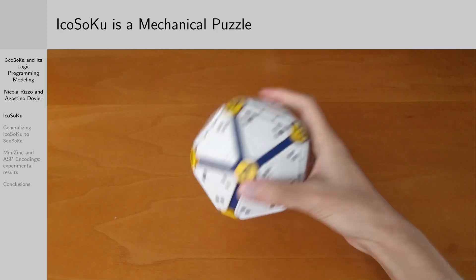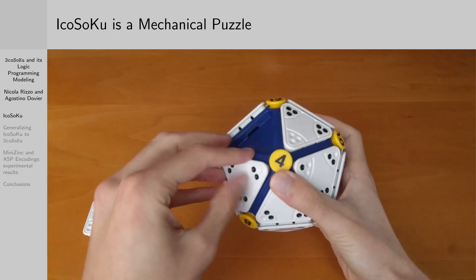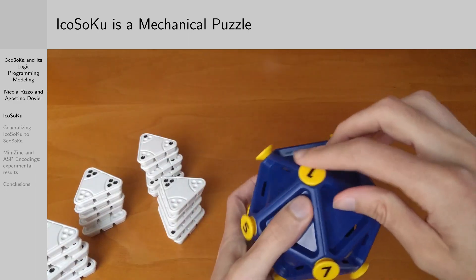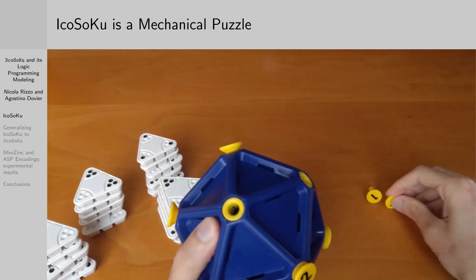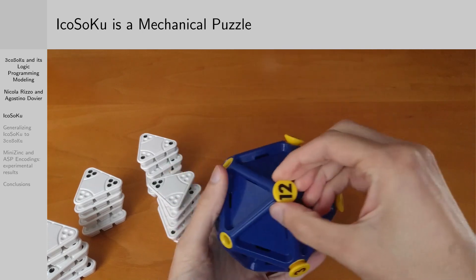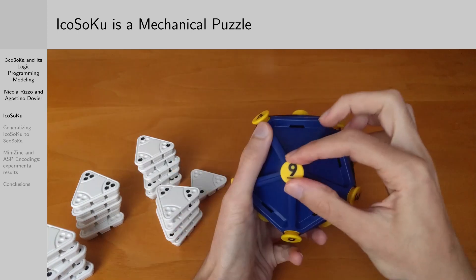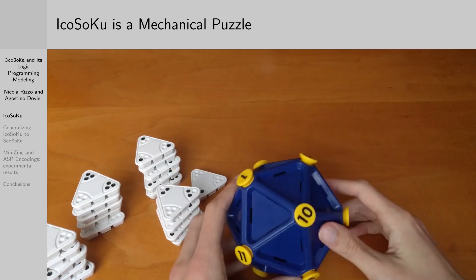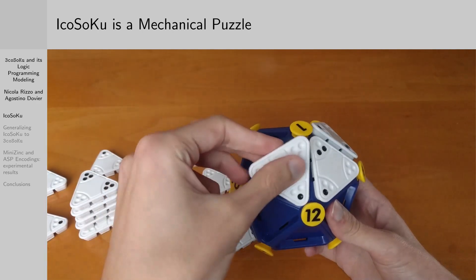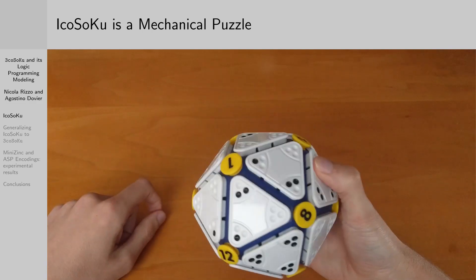So let's talk about the game. Icosoku is a mechanical puzzle created in 2009 by Andrea Mainini. It's made of a blue plastic icosahedron, 12 yellow pegs with the numbers from 1 to 12 written on them, and 20 triangular tiles with from 0 up to 3 black dots on each vertex. The game is set up by placing all the pegs on the vertices of the icosahedron arbitrarily. Now, the goal is to place all the tiles on the faces of the solid in such a way that the number of black dots surrounding each vertex is equal to the number of its peg.